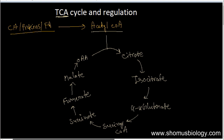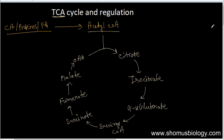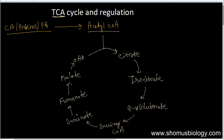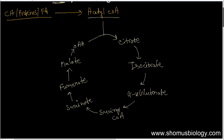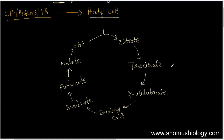From succinate it produces fumarate, from fumarate it produces malate, and then from malate back into oxaloacetate — this is how the cycle completes. This is something you should always keep in your mind if you are a biology student, no matter what exam you are attending.